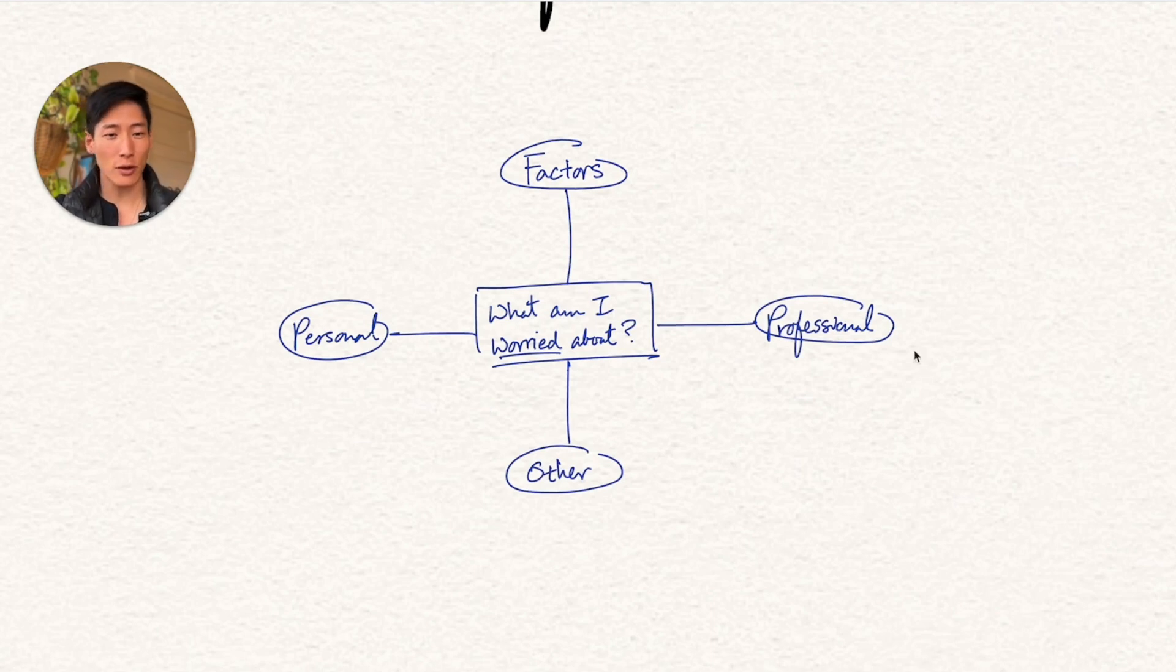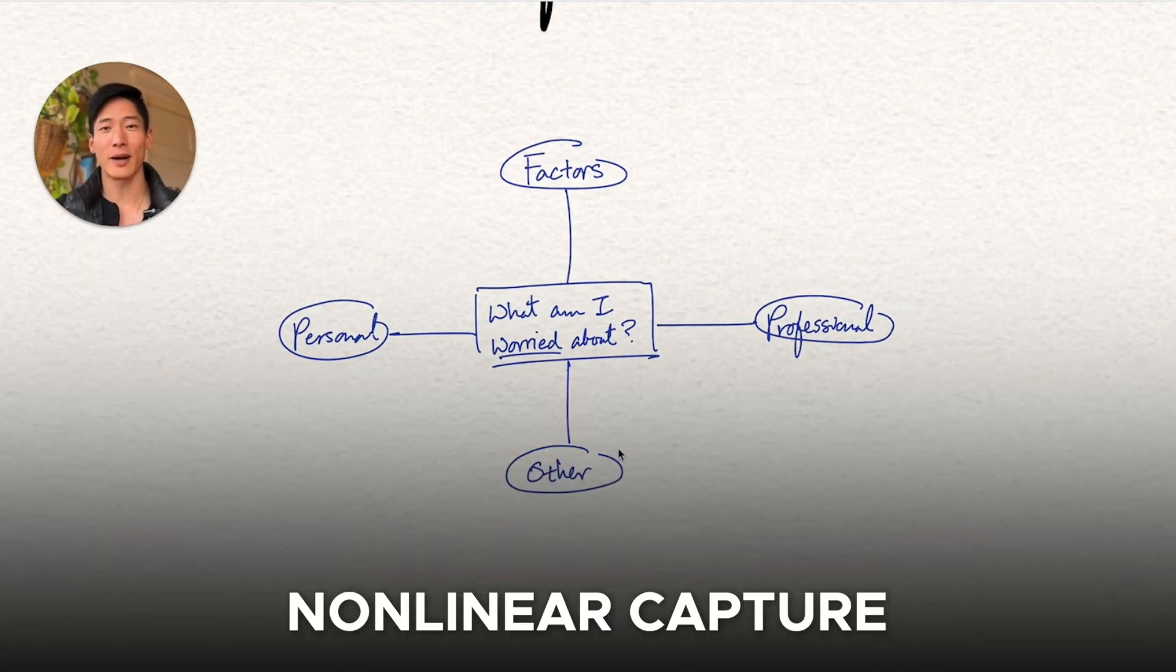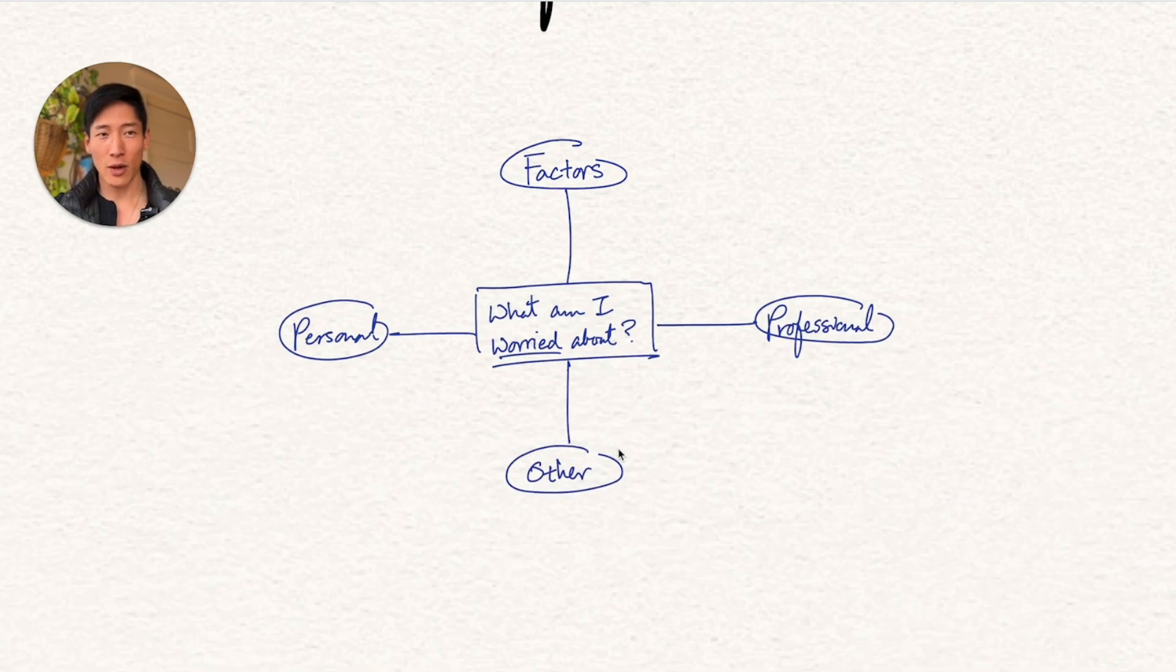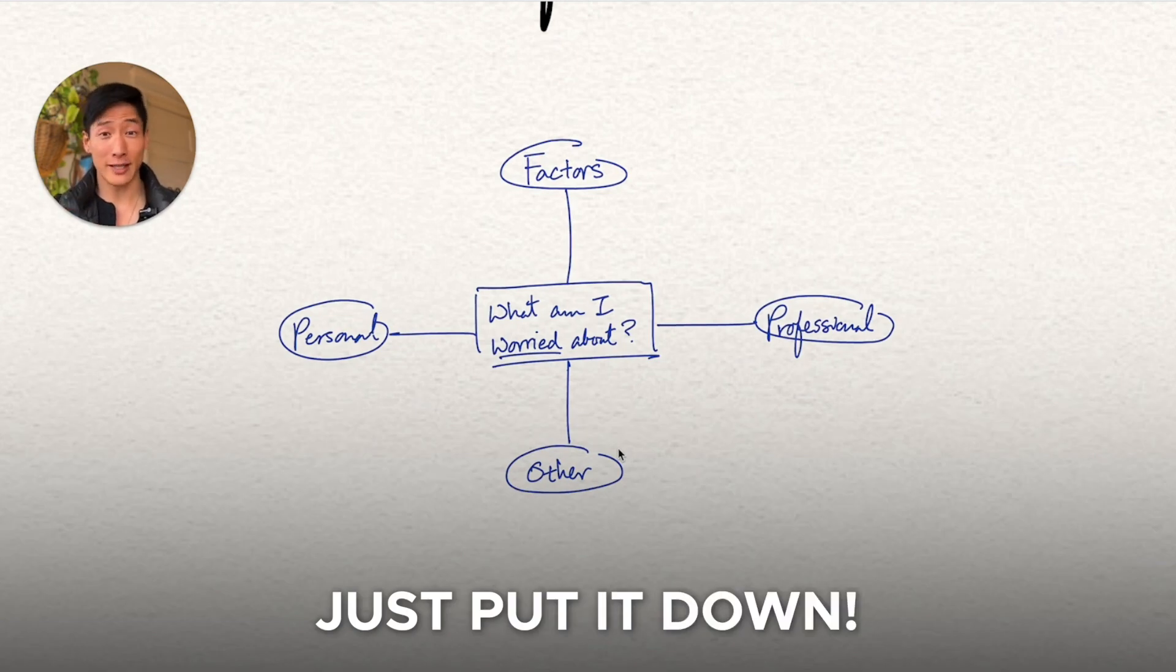I then expand out in subnodes all the different major categories that go into the question. So in this case, it's personal and professional, which will capture probably the vast majority of the different things that most people are worried about. And then I have the other category, which is a catch-all since the advantage of having a mind map is that we can jot down non-linearly whatever comes to mind onto this piece of paper. We don't have to worry about the sequence, when it happens, what the priority is. If it's on our mind, just put it down.